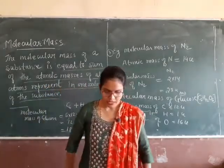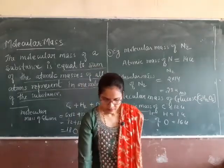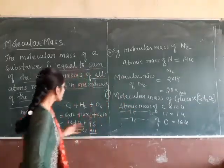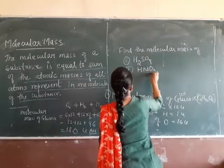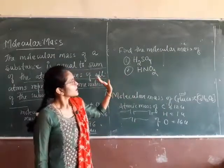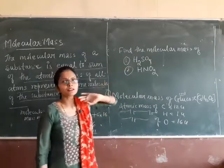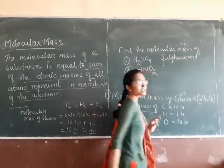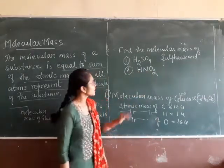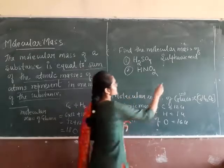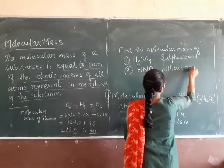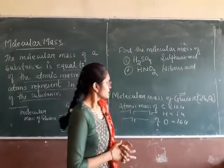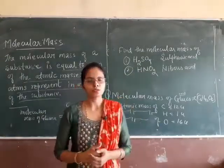I hope you now understand how to calculate molecular mass. Now I am giving you some questions to solve on your own. Note these down - these are your homework: find the molecular mass of H2SO4 (sulfuric acid, also called king of acids / king of chemicals) and HNO3 (nitric acid). You should also remember the names of these compounds. If you have any doubts, you can ask me. Thank you.